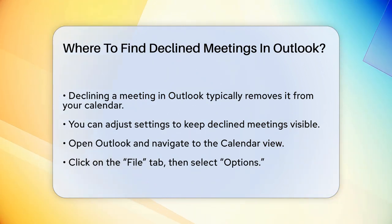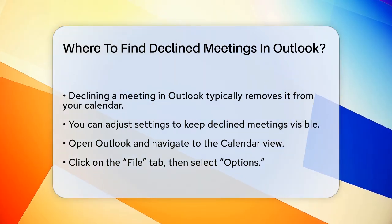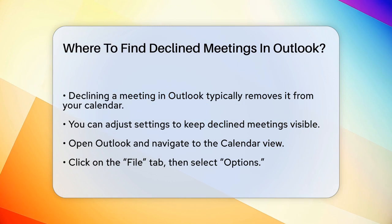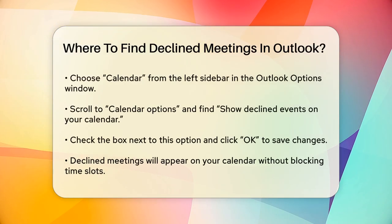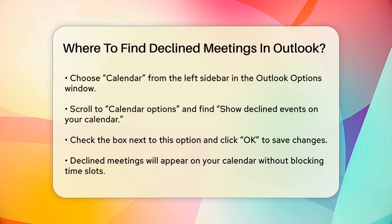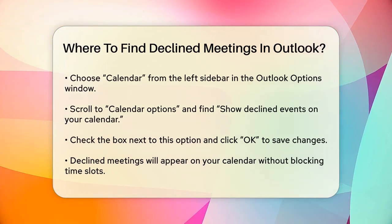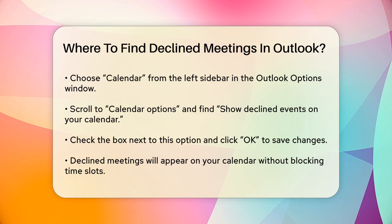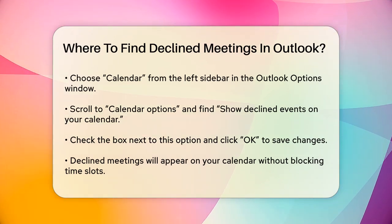Click the File tab in the top left corner, then select Options from the menu. In the Outlook Options window, choose Calendar from the left sidebar. Scroll down to the Calendar Options section and look for the option labeled Show Declined Events on your calendar. Check the box next to it and click OK to save your changes.